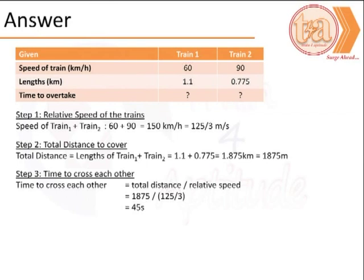What we need to find is the time to overtake each other. We begin by calculating the relative speeds of the trains, in this case 150 km per hour or 125 by 3 meters per second.